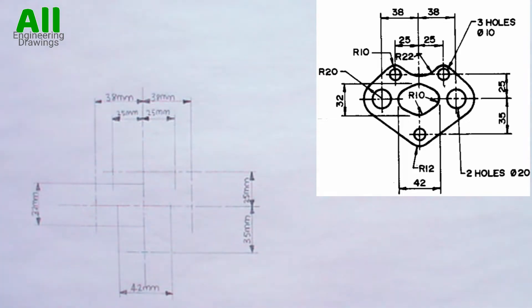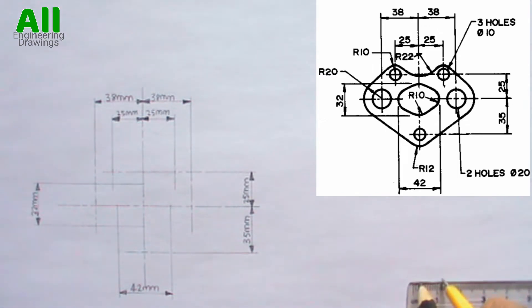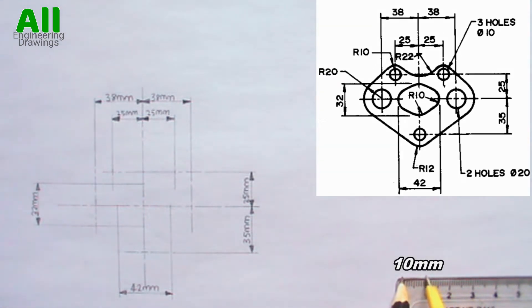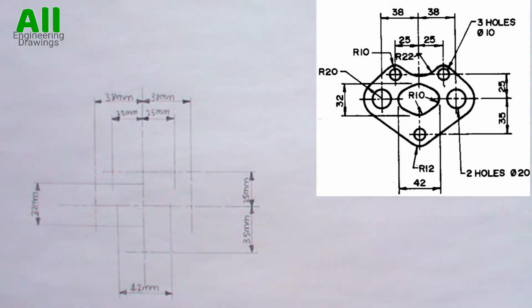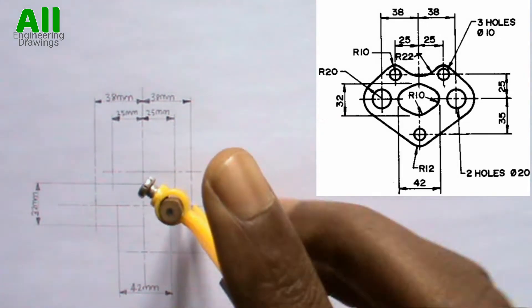After drawing your layout, you have to draw circles on appropriate points on your drawing. Adjust your compass to a radius of 10mm, then place your compass on this point and draw a circle.